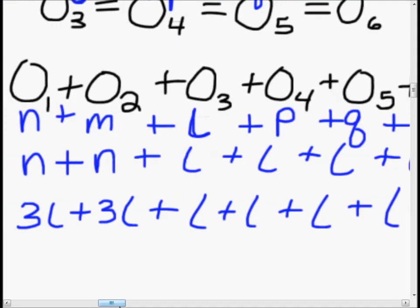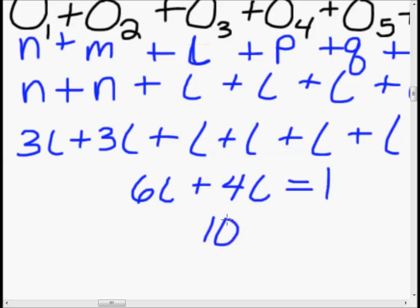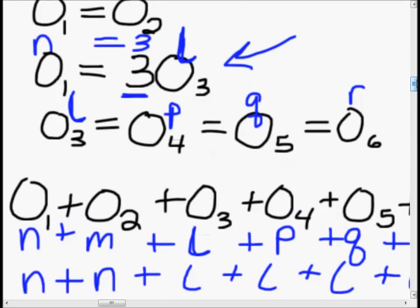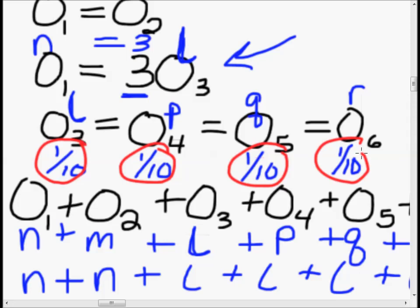Now this is just algebra with one variable. Combining: 3L plus 3L is 6L, and L plus L plus L plus L is 4L, giving us 10L equals 1. Therefore L equals 1/10. Since L was O3, that means O3 equals 1/10. And since L equals P equals Q equals R, we also have O4 equals O5 equals O6 equals 1/10. We've figured out the outcome probabilities for outcomes 3, 4, 5, and 6.